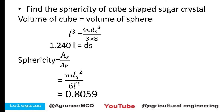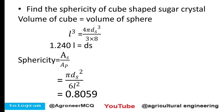Find the sphericity of a cube-shaped sugar crystal. No dimension is specified, so assume a cube with all sides equal to l. Equate volume of cube (l³) to volume of sphere (4/3 π r³) to get ds = 1.240 l. Then sphericity = As / Ap = π/6 × ds² / l², giving sphericity = 0.8059. The sphericity of a cube-shaped sugar crystal is 0.8059.